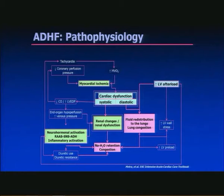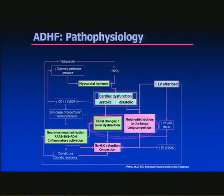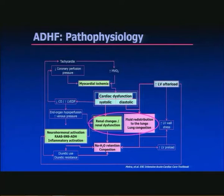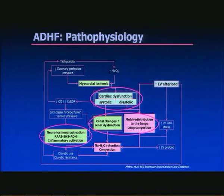The pathophysiology of acutely decompensated heart failure is not well characterized, but as you can see from this diagram, it is complex. The key issues to focus on today are: fluid redistribution to the lungs and lung congestion, renal changes and renal dysfunction, cardiac dysfunction, and neurohormonal activation.